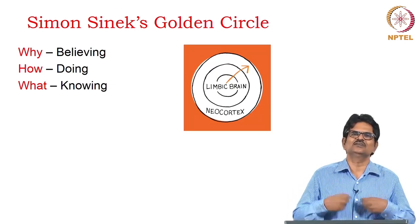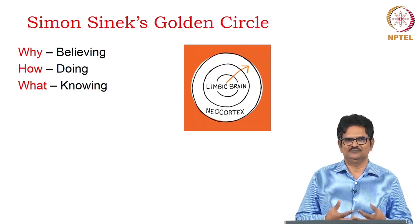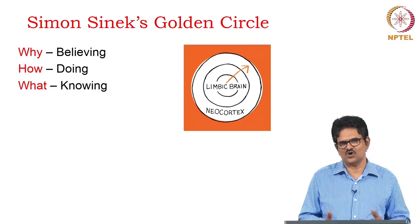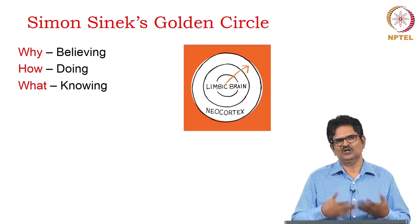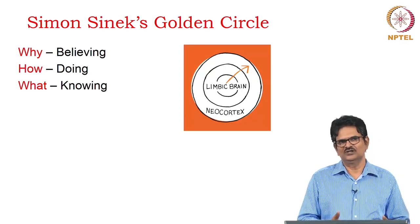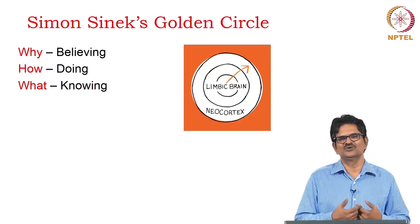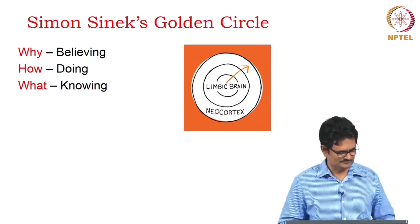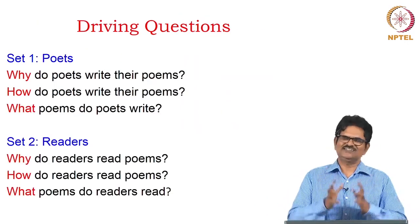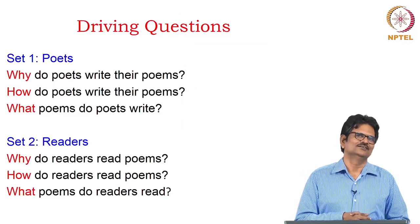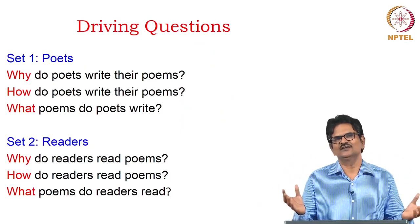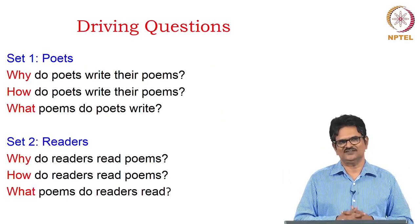If our belief system is strong, then whatever we do, we will come to know it and it will be very successful. Simon Sinek's Golden Circle has given us two sets of questions — one for poets and another for readers.